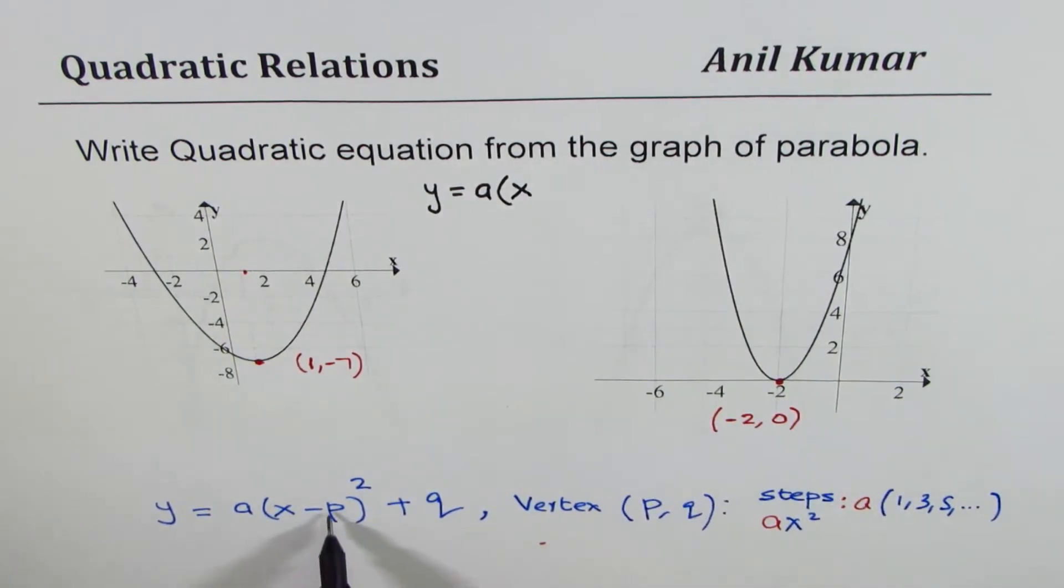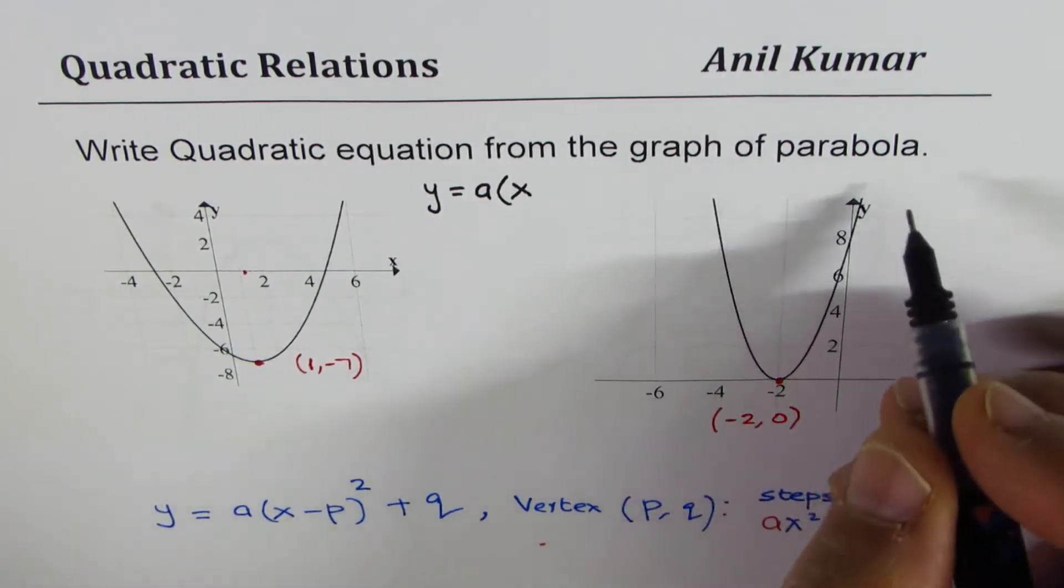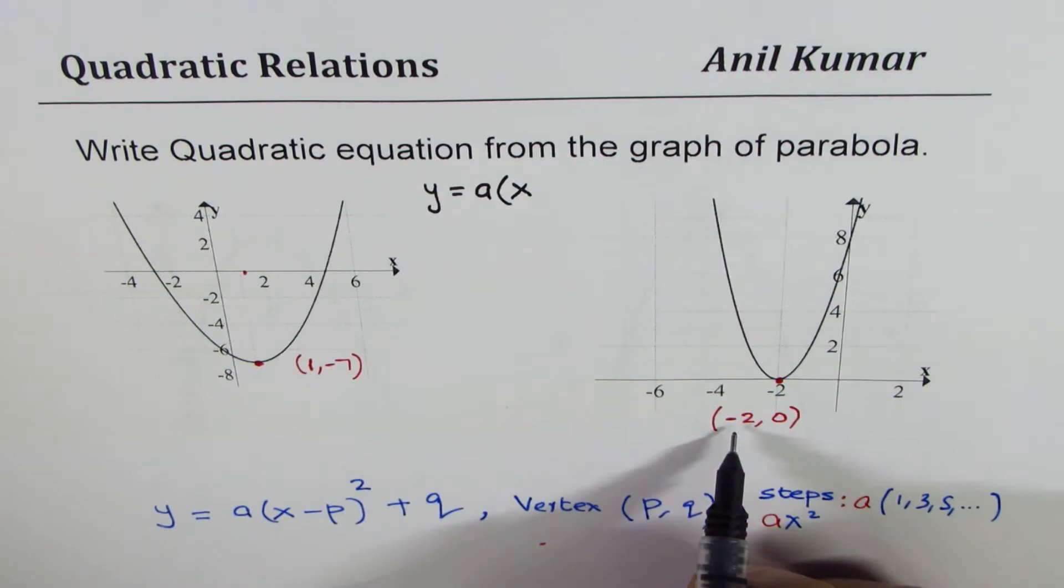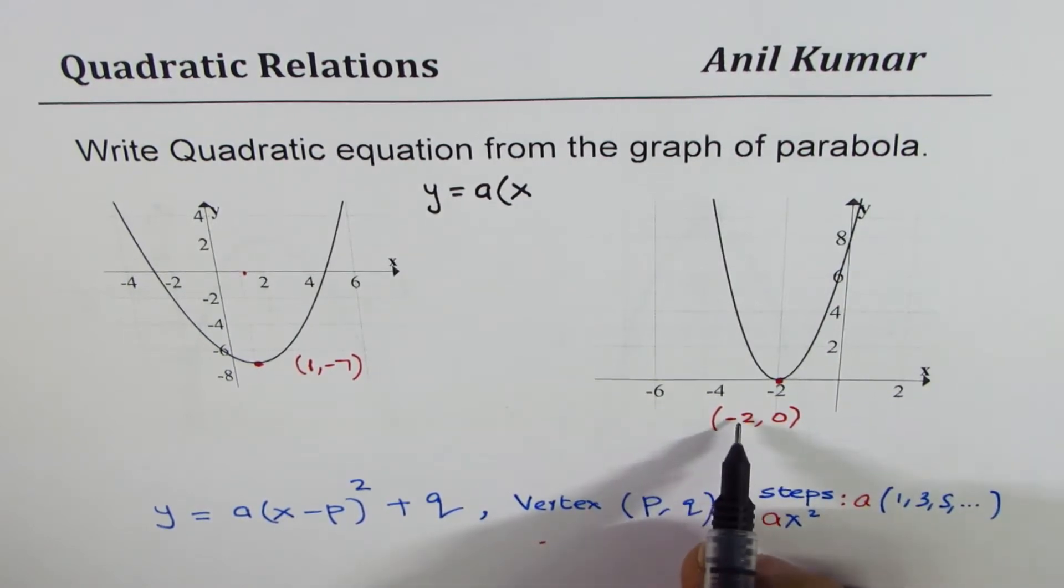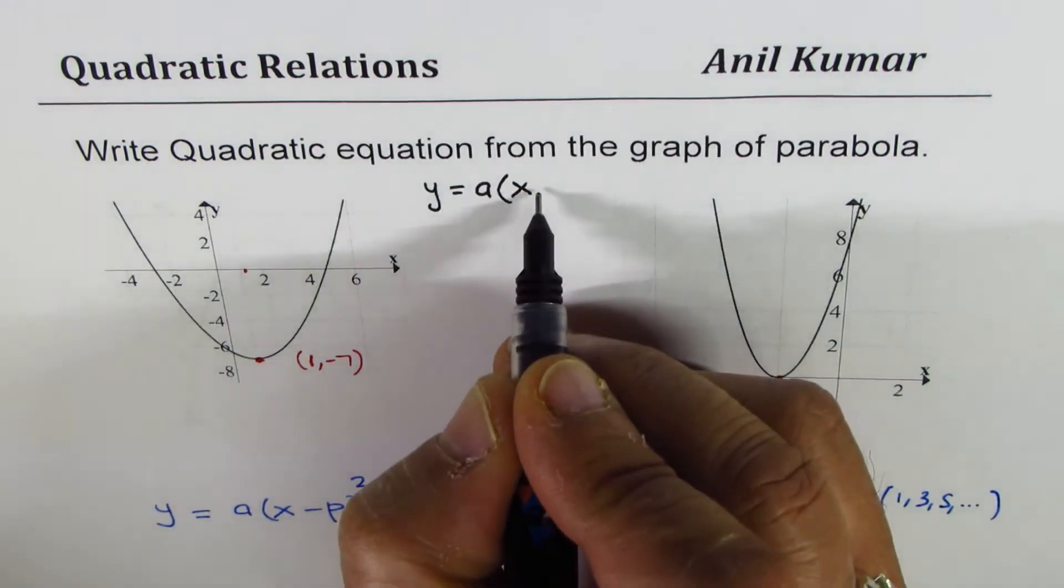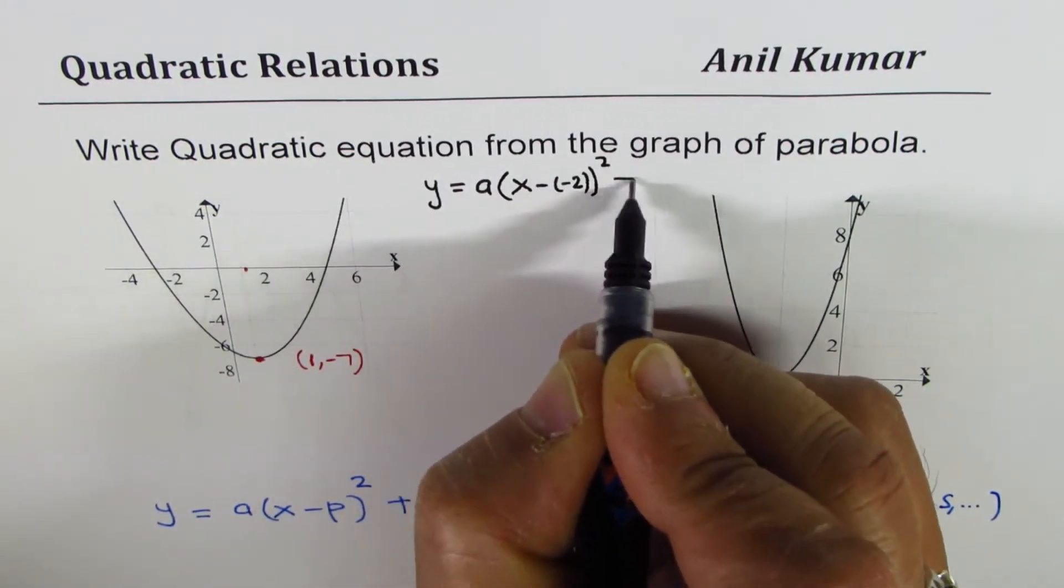You know the vertex is minus 2, 0 and that means I could write equation of this graph as y equals to a times x minus of minus 2. So we are using this formula, the vertex here is minus 2, 0, so p value is minus 2.